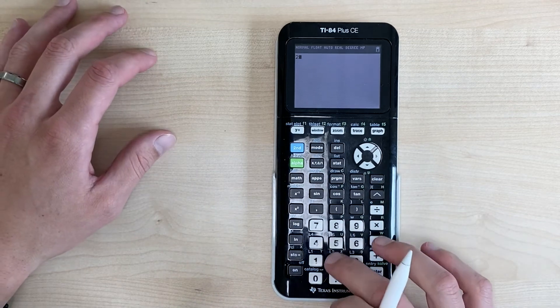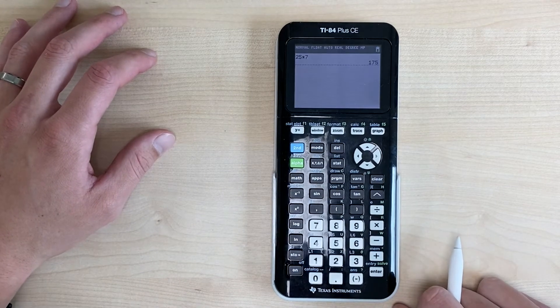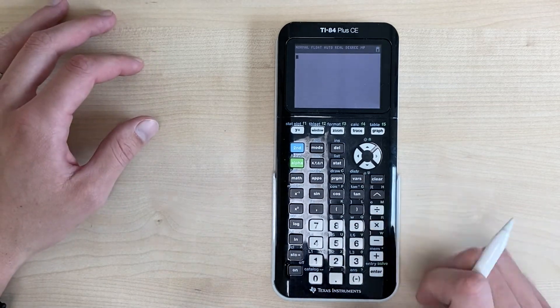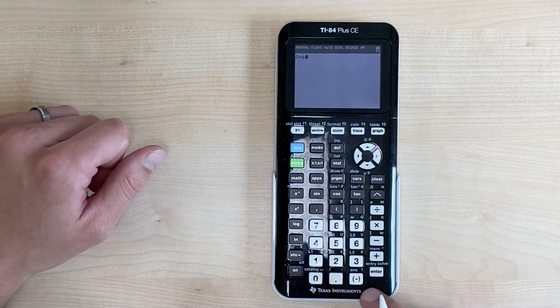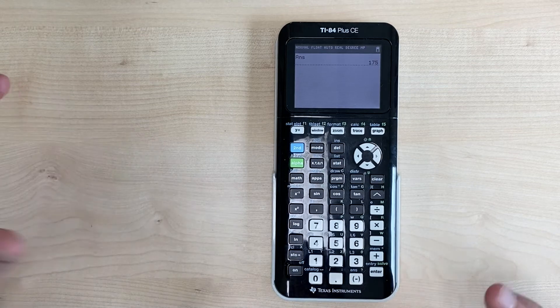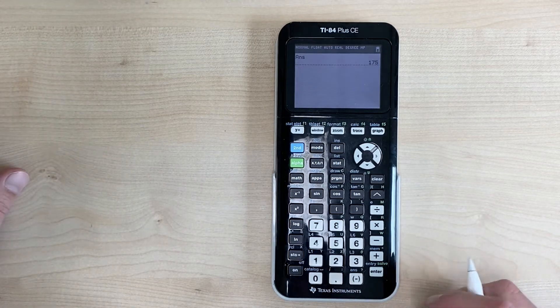Let's just say you're doing 25 times 7 and you get 175 and maybe you accidentally hit clear. You don't want to retype that so you can just hit second answer and it brings you back to 175. So that's the short way to how to use the previous answer key.